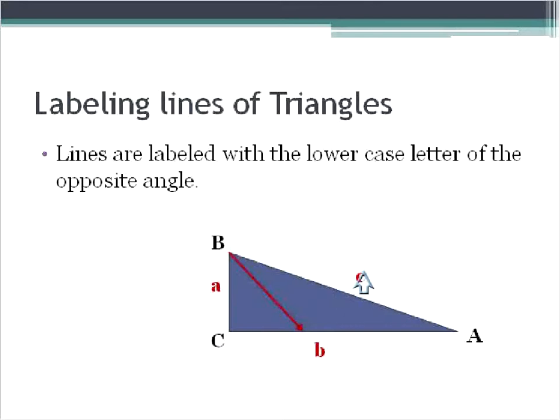Same with this one. This would be C, so it's called c. A is called a. So these would be the labels for the lines. You label them the opposite of the angle and you give them the lower case letter.